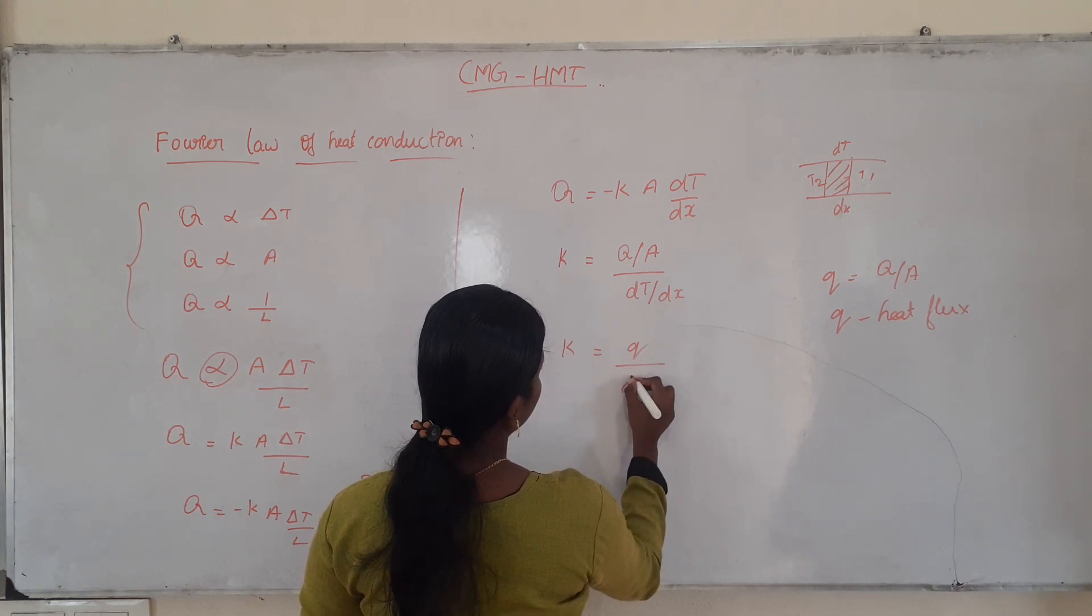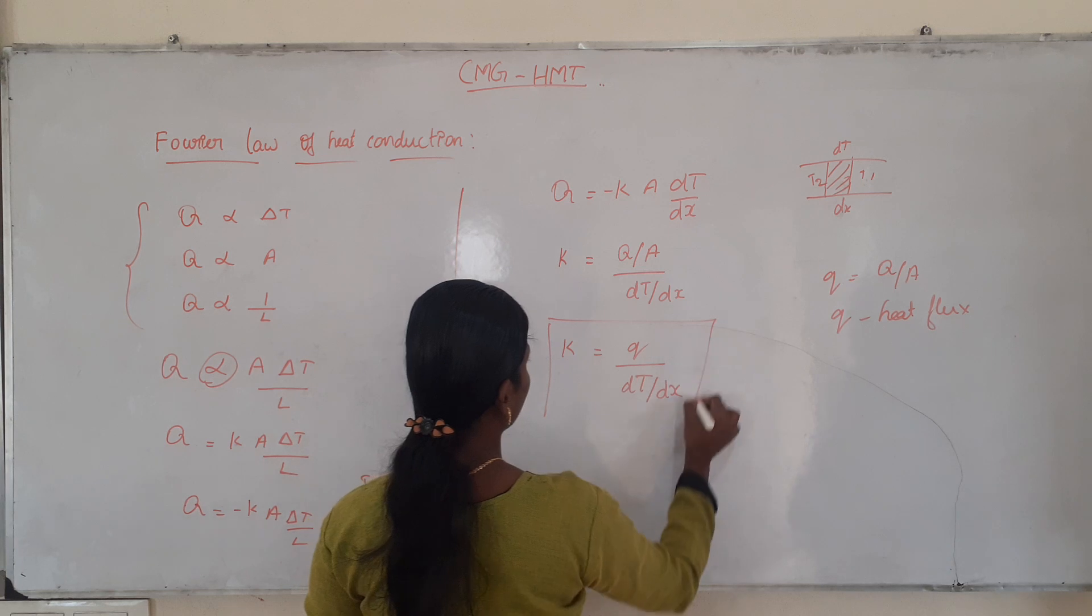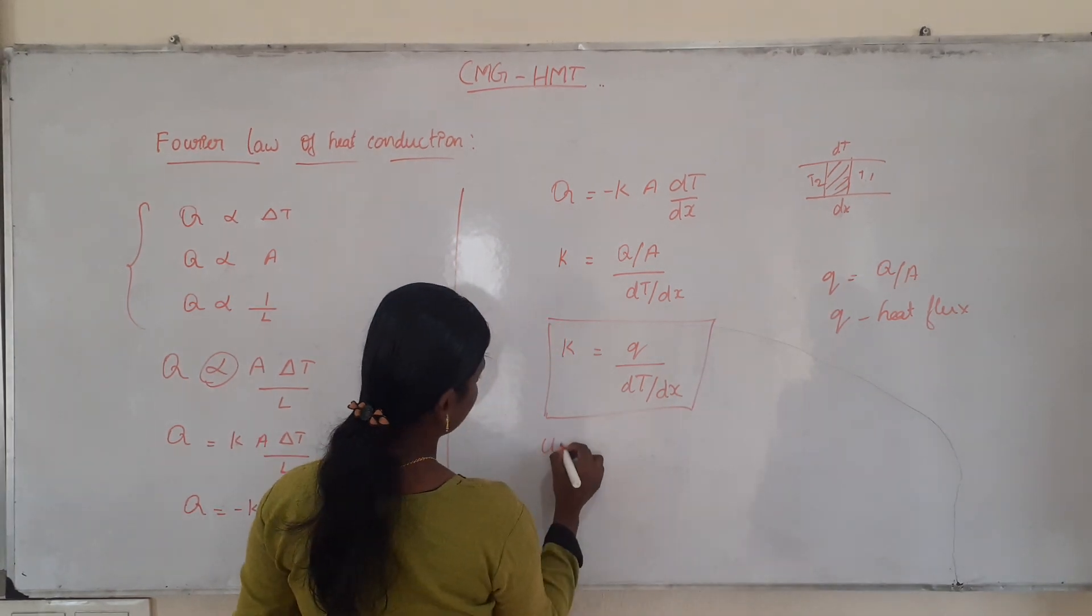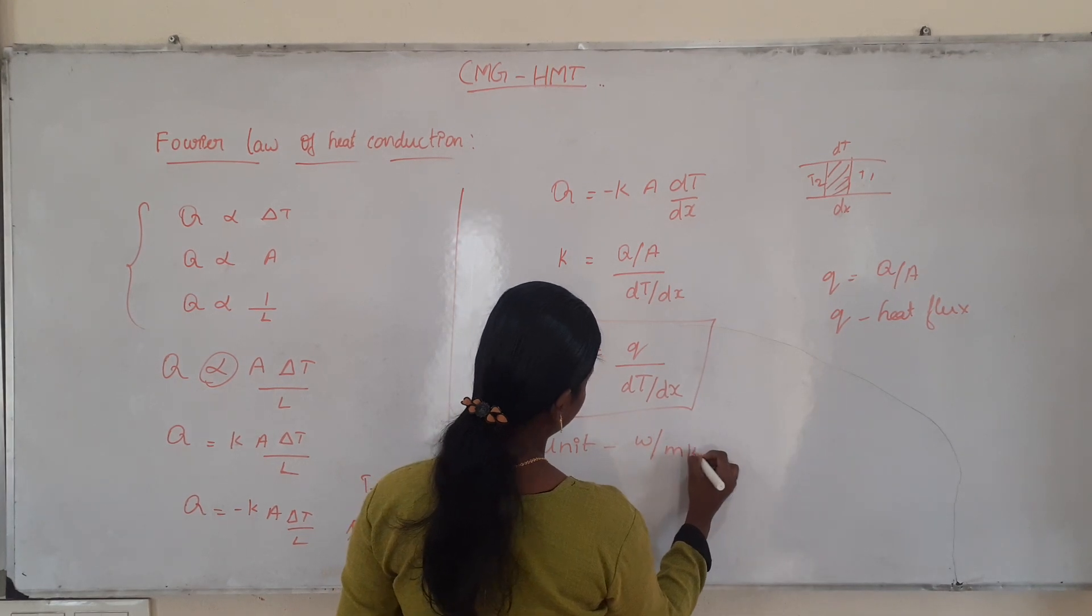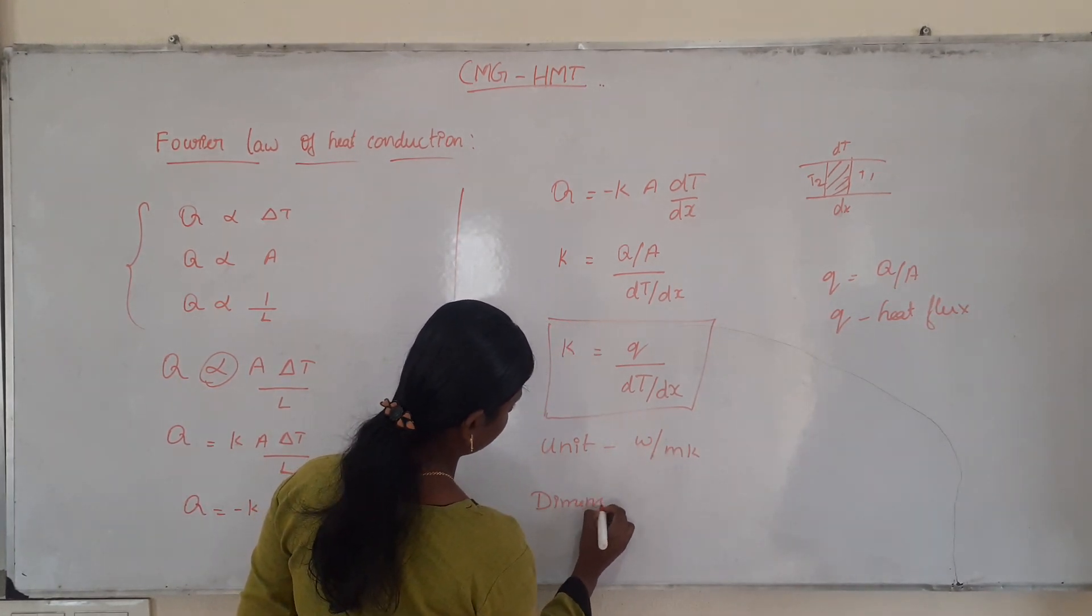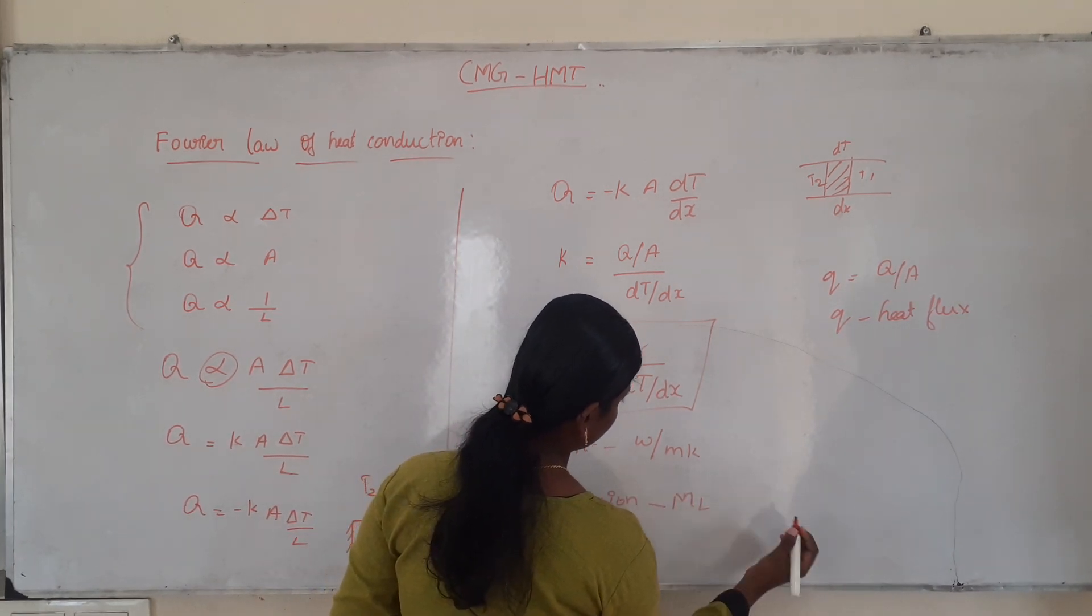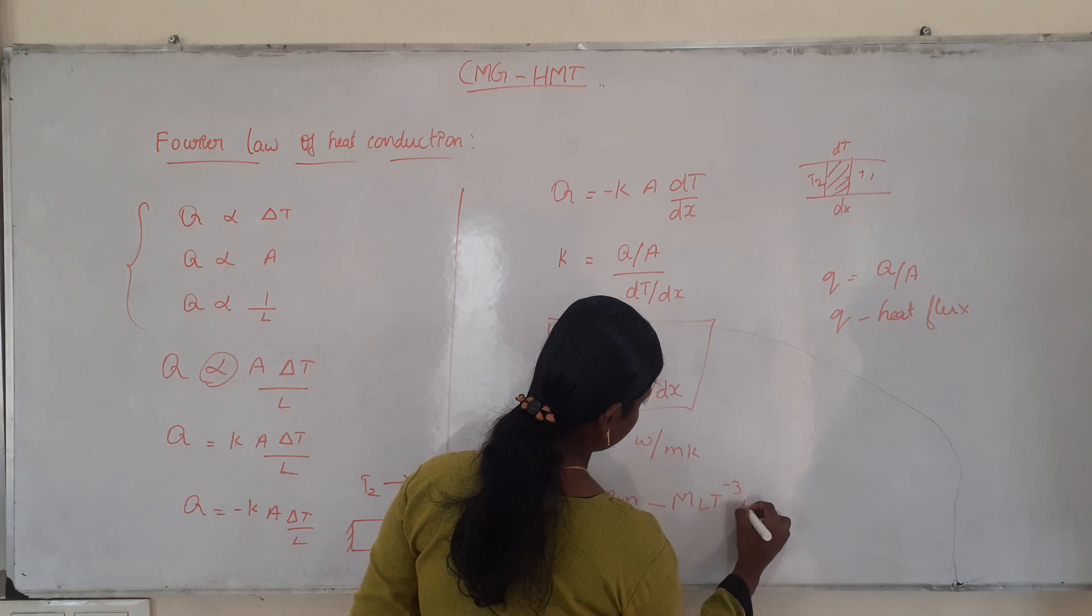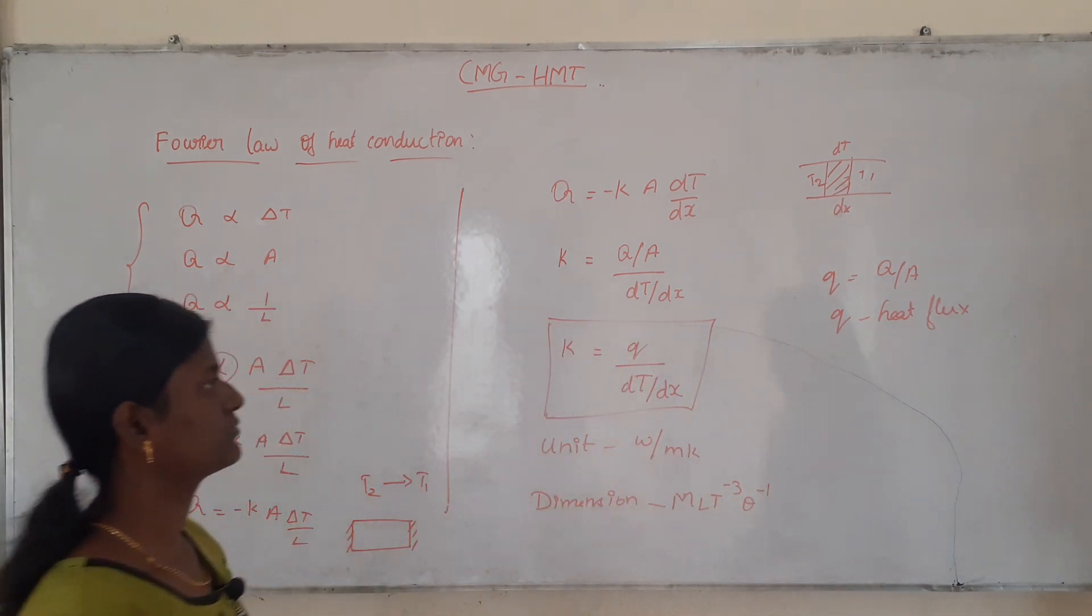Now for thermal conductivity K, this is the unit: Watt per meter Kelvin. This is the dimension: ML t power minus 3 theta power minus 1.